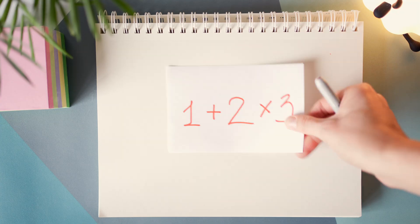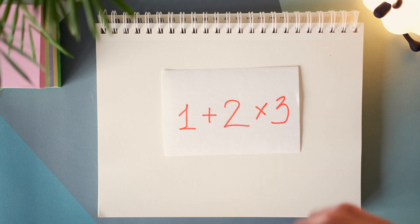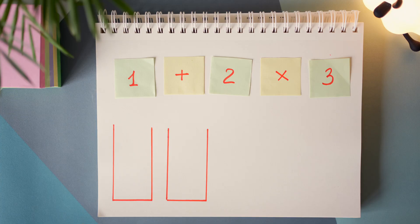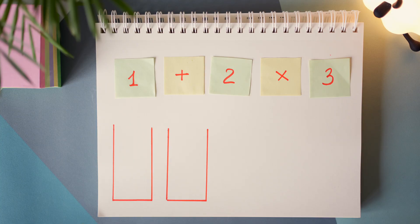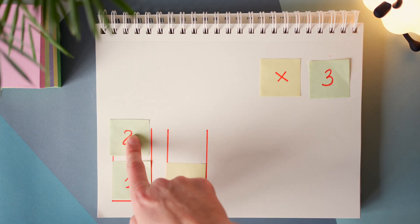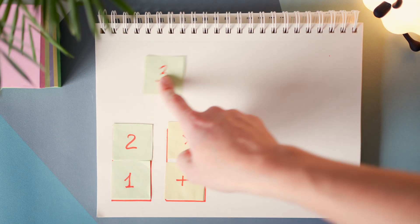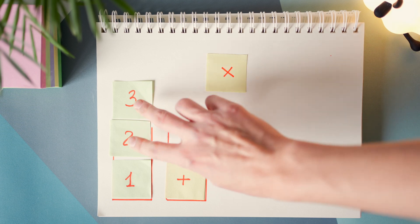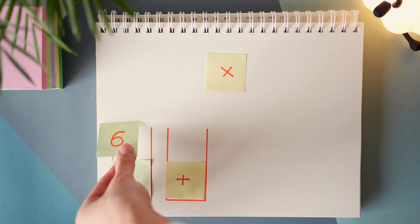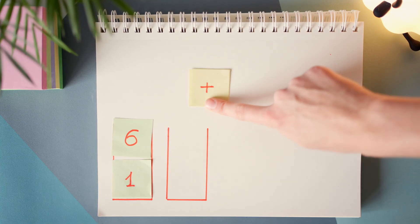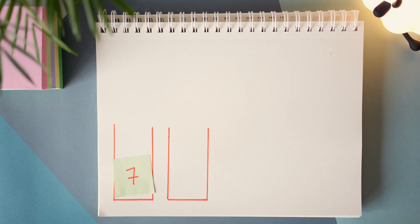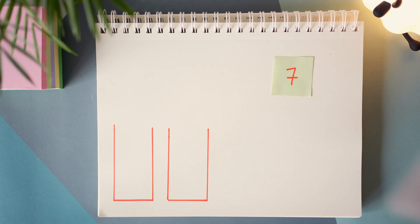First, let's separate the equation into operands and operators, and add a couple of stacks for each. In math, different operators take different priorities, so we have to do multiplication before addition. This is exactly how parsing is going to work — we go left to right and put the operands and operators into corresponding stacks. At the end of the equation, with no more higher-priority operators, we pop the operator and the two numbers it operates on, and replace two and three with the result. We do the same again — pop the operator and the two numbers, replace with the result. Once the operator stack is empty, we pop the result of our equation.